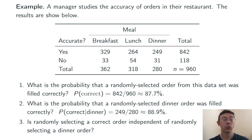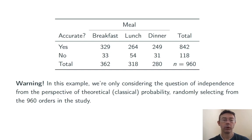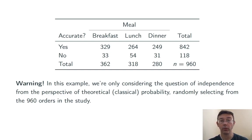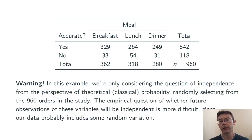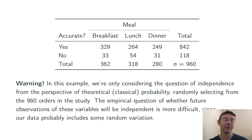Finally, is randomly selecting a correct order independent of randomly selecting a dinner order? The answer is no — the conditional probability (88.9%) and the overall probability of a correct order (87.7%) are not the same. One word of warning: in this example we're only considering classical probability within this data set. The empirical question of whether future observations will be independent is harder, since our data could include random variability. To establish whether these variables are truly independent from an empirical standpoint, we'll need chi-square testing, which we'll cover much later.